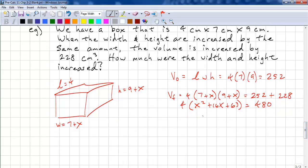Length times width times height. This happens to be our new width and height. So, we have the original volume plus our increase, which is 228. So, now we expand this. This is 4. Let's expand this first. X squared plus 16X plus 63 equals 480. Now, we want to keep numbers low. So, instead of multiplying this out, it's best to divide both sides by 4 since this is divisible by 4.